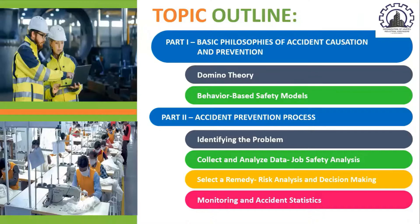Here we have our topic outline with 9 parts. Part 1 is the Basic Philosophies of Accident Causation and Prevention, with subtopics Domino Theory and Behavior-Based Safety Models. Part 2 is the Accident Prevention Process, covering Identifying the Problem, Collect and Analyze Data, Job Safety Analysis, Select a Remedy, Risk Analysis and Decision Making, and Monitoring and Accident Statistics.